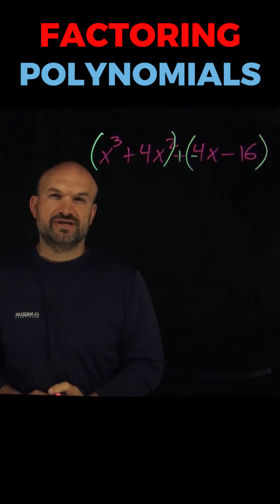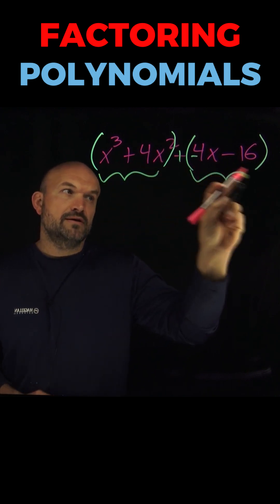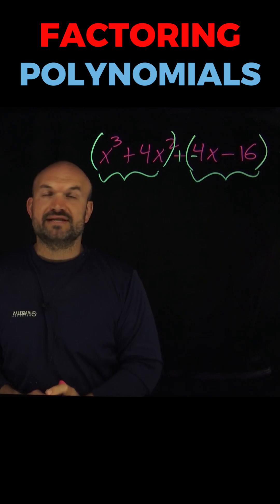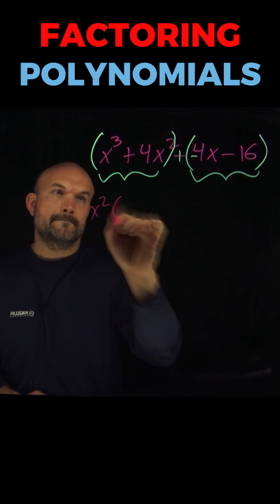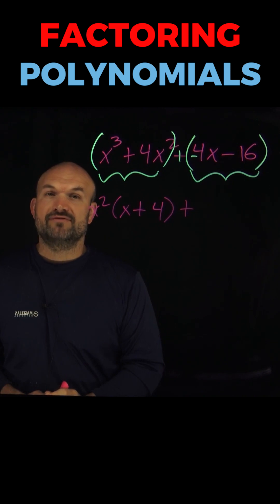The next thing I'm going to want to do is factor out the GCF, basically the greatest common factor of each of these expressions. So what we want to do is see what they have in common. In this example, you can see I have an x squared, so I'm going to factor that out. In this example, you can see they have a negative four, so I'm going to go ahead and factor that out.